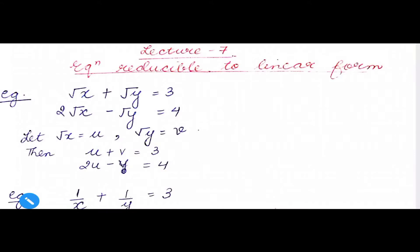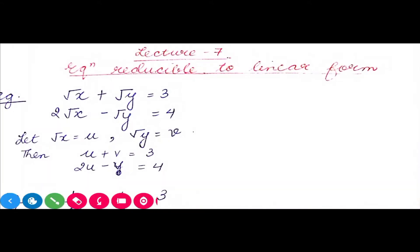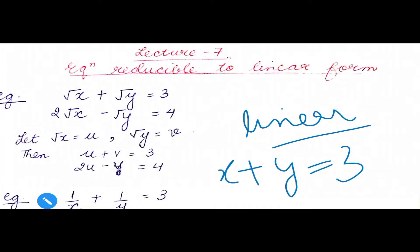Hello everyone. This is lecture number 7, a very important lecture. In this lecture we will do equations reducible to linear form. When we started this chapter, the heading was 'pair of linear equations in two variables.' An equation is linear when every variable involved has degree 1. For example, x plus y equals 3 is a linear equation.